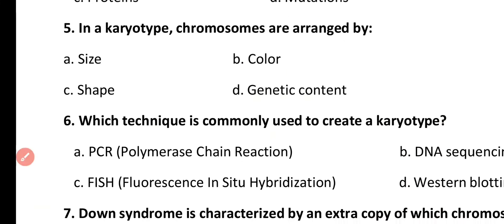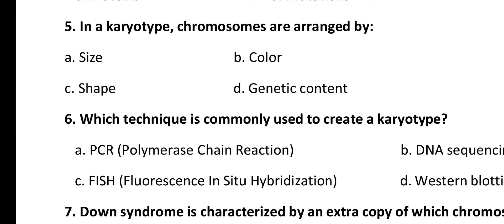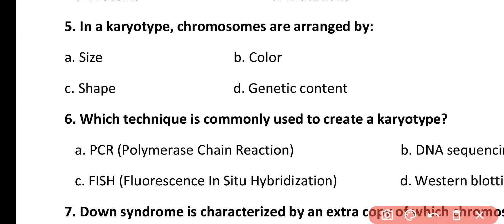Question number 5. In a karyotype, chromosomes are arranged by: size, color, shape, or genetic content. Correct answer is option A. In a karyotype, chromosomes are arranged on the basis of their size.